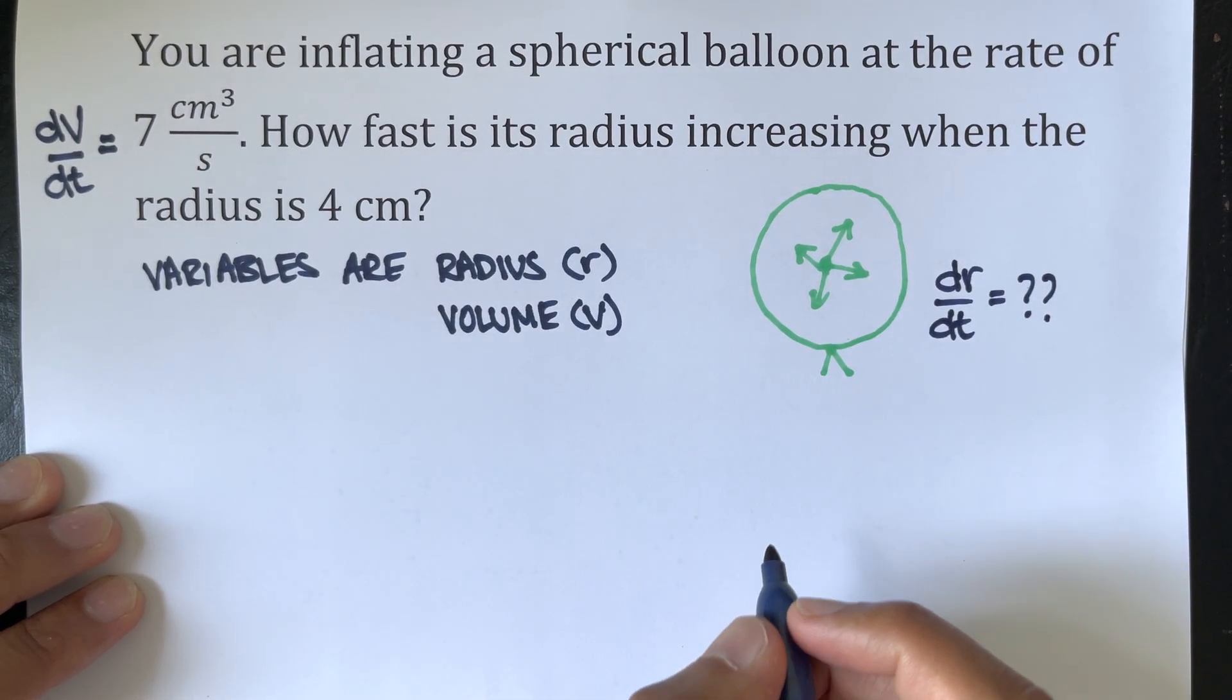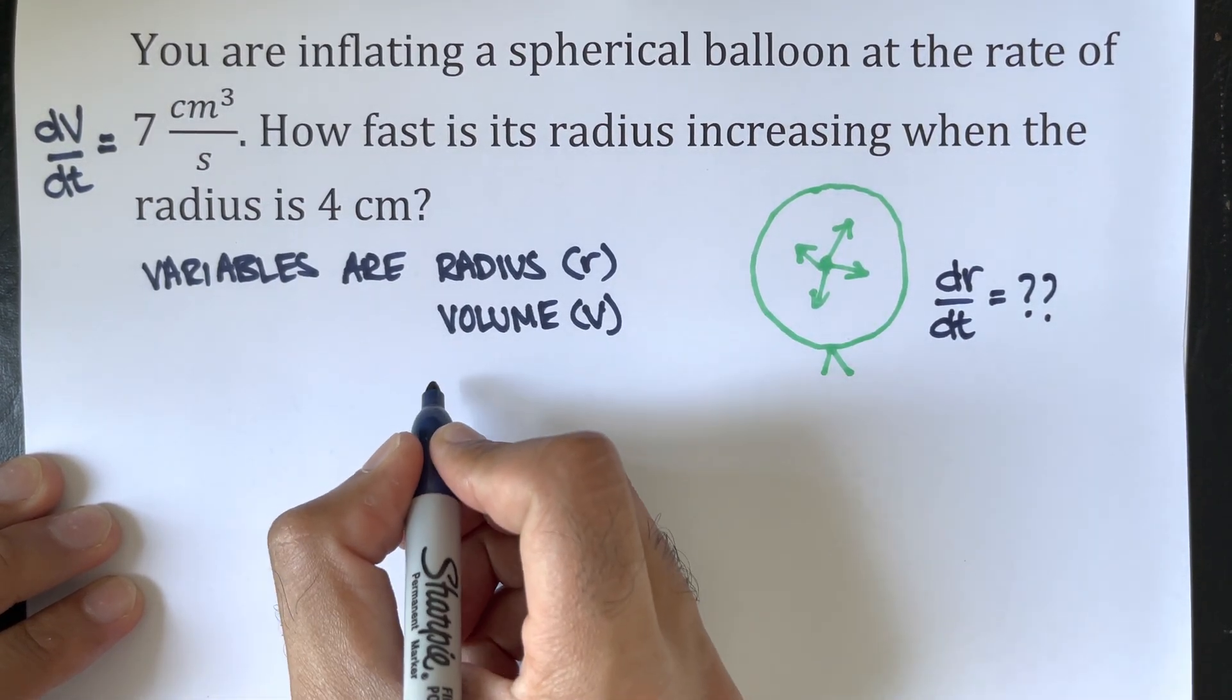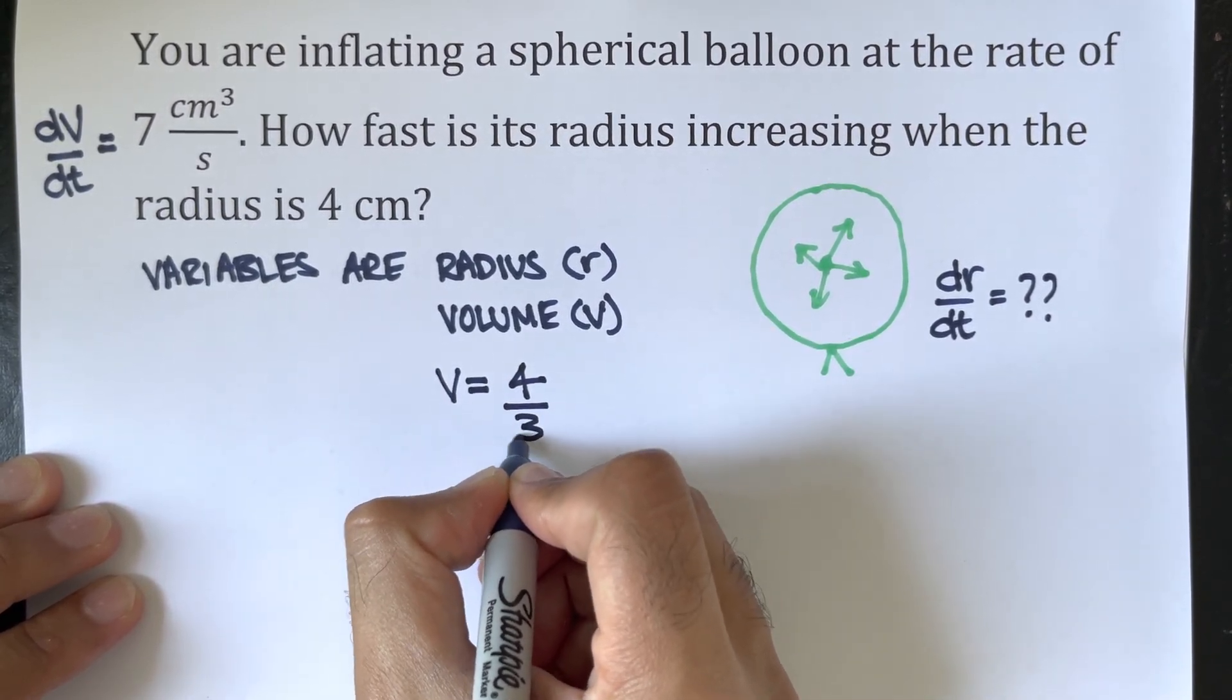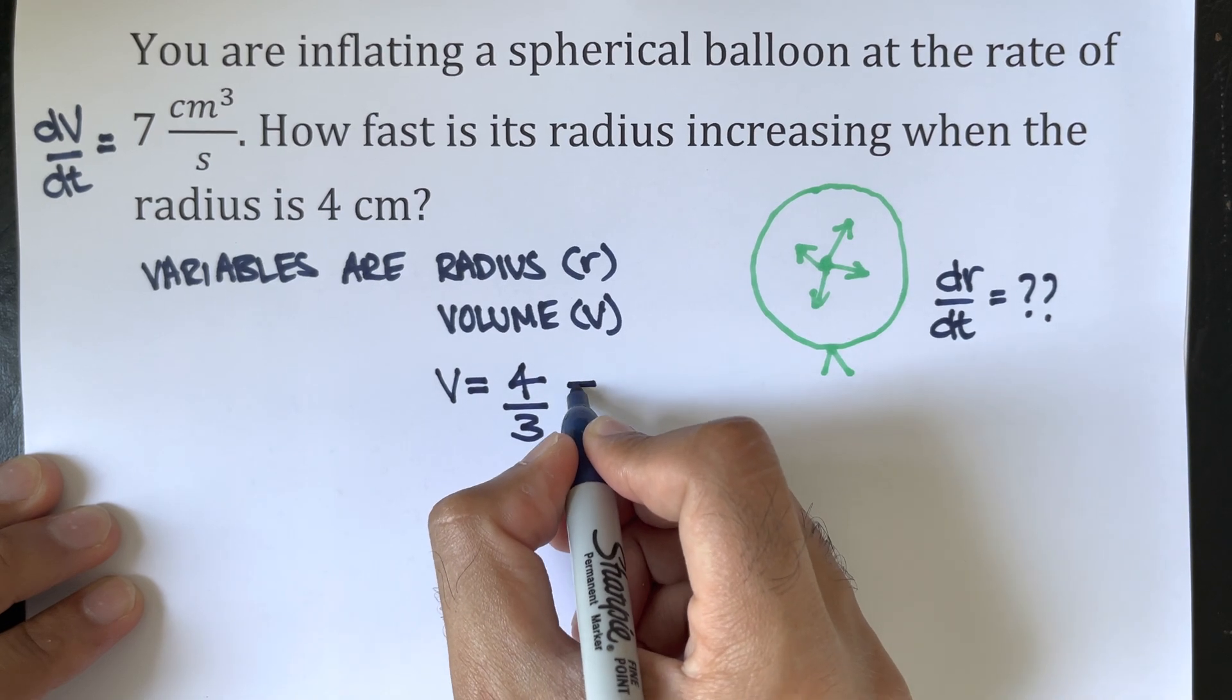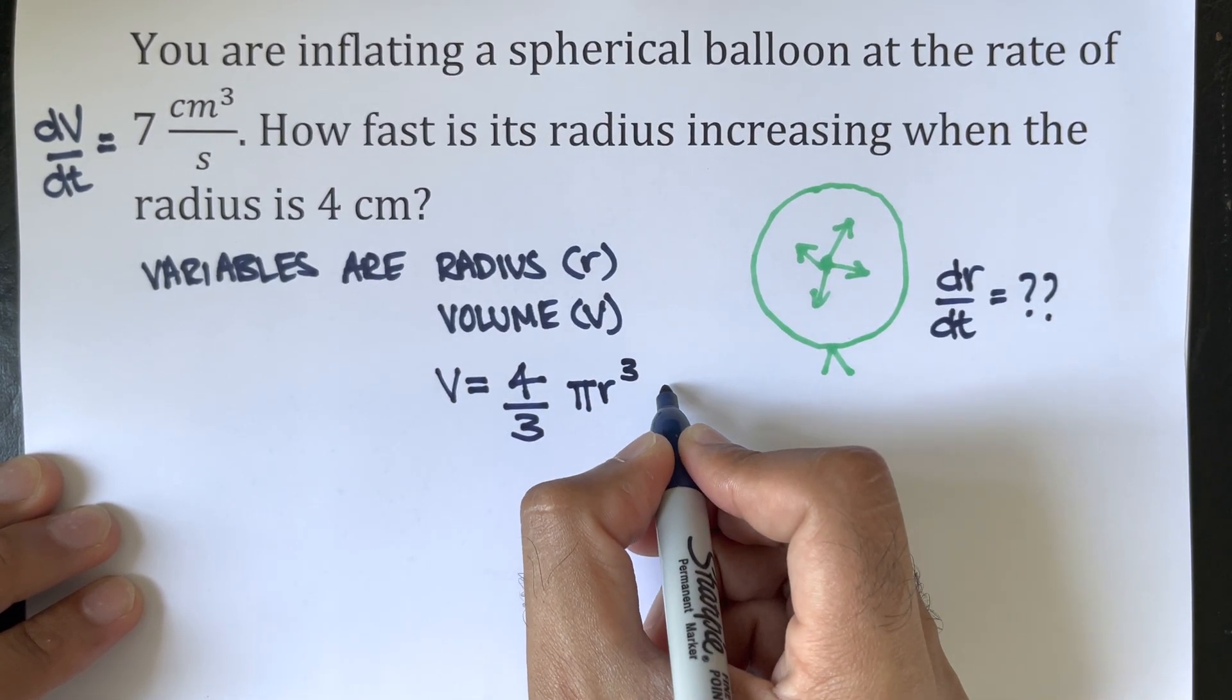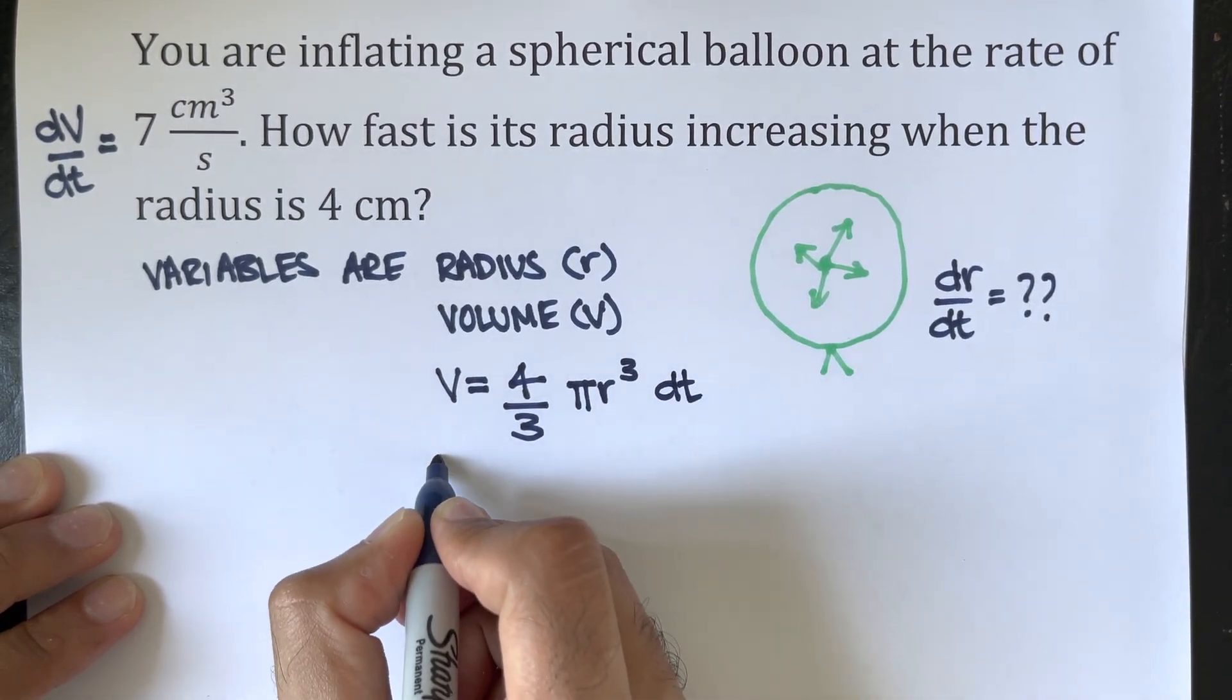We know from definition that the volume of a sphere is V = 4/3 π r³.